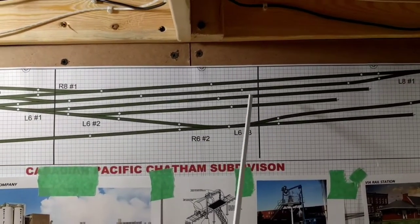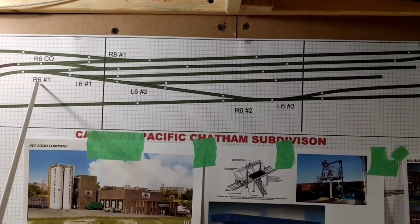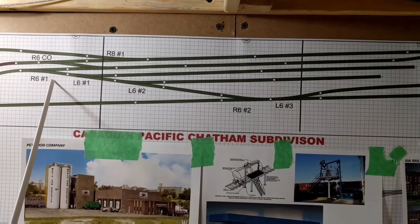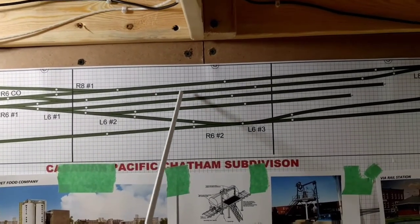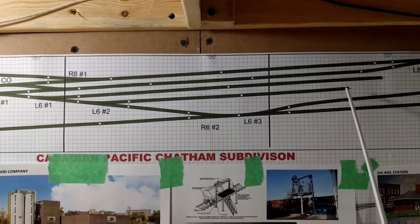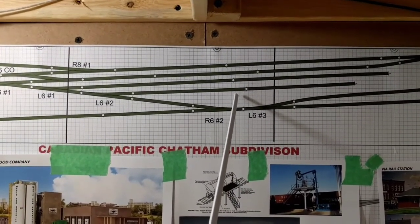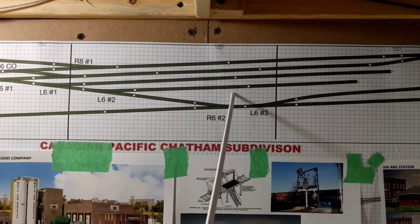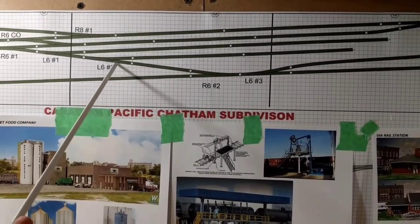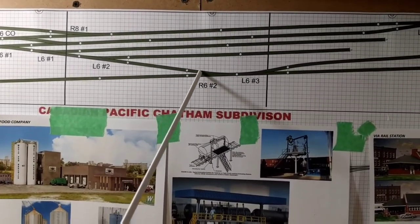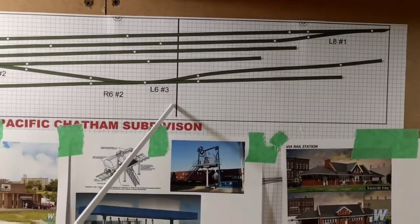That secondary line leads into the yard. Here is gonna be the yard leads, gonna be a number six going into two number six lefts. This first siding is going to be where the train drops off the full cars for the industries. The secondary track is going to be the empties and the parking for the switcher.